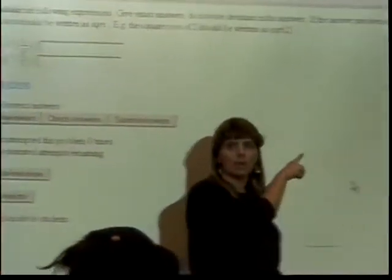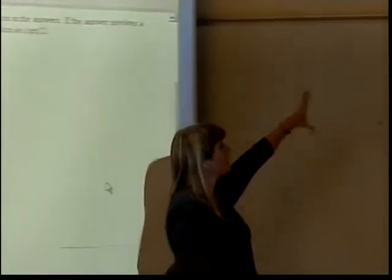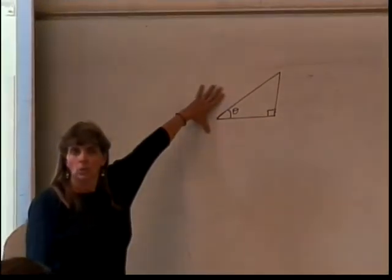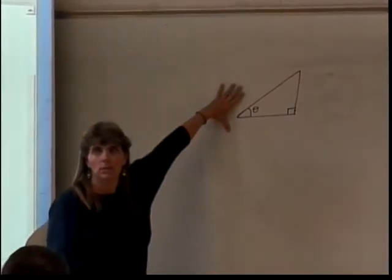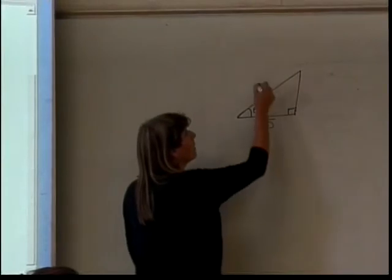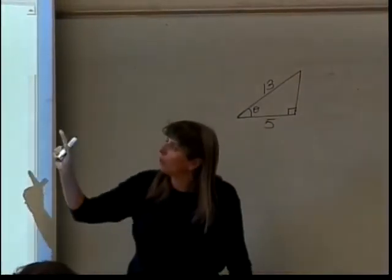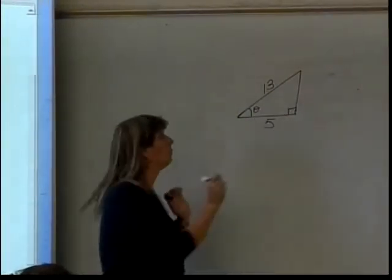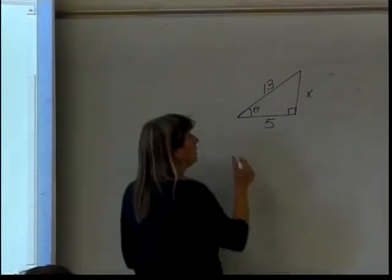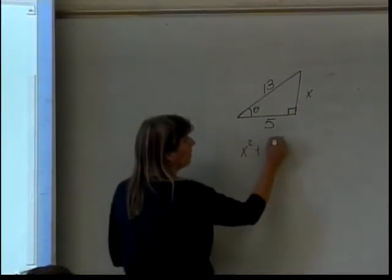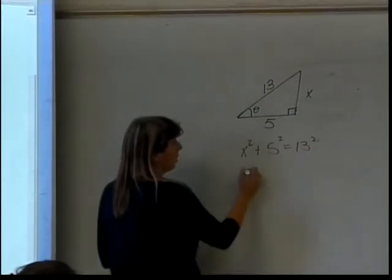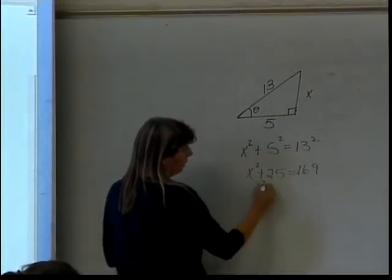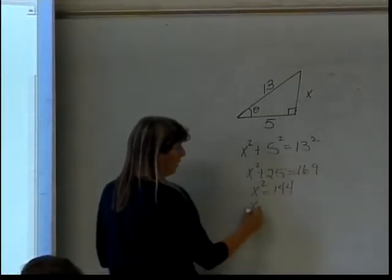So that means if I take the cosine of that angle, I'm going to get 5 thirteenths. What does that mean in terms of size of this triangle? What do I do with the 5 and the 13? 5 is adjacent. 13 is hypotenuse. Now, in order to answer what the sine of this angle is, I will need the opposite side. So we'll call it x. So I'll have x squared plus 5 squared equals 13 squared. So x squared plus 25 equals 169. That gives me x squared equals 144.